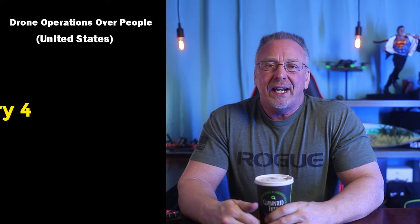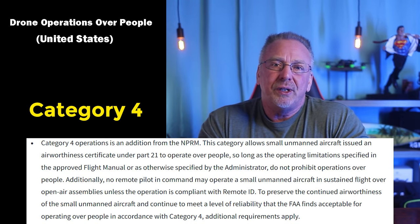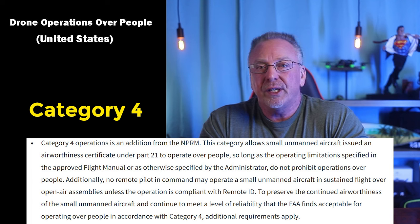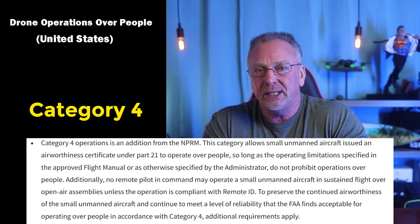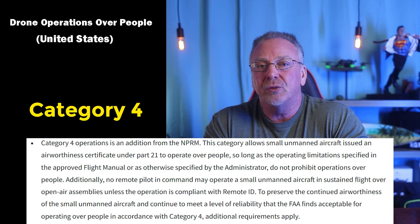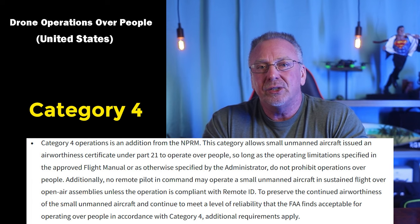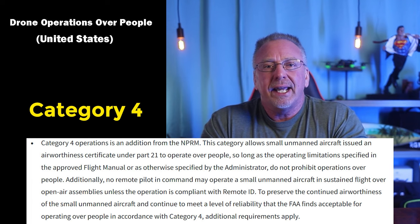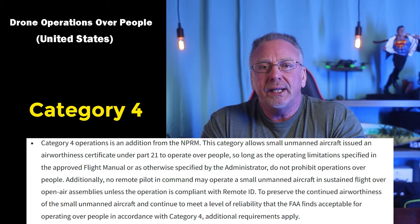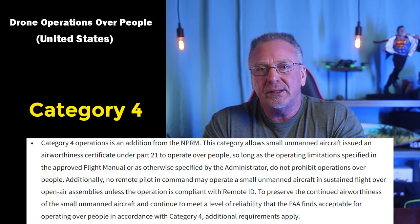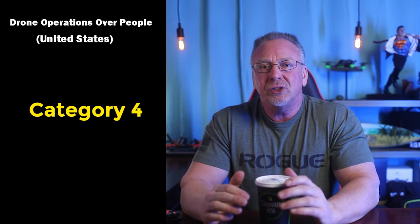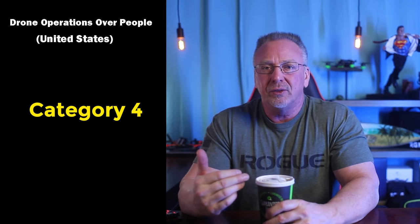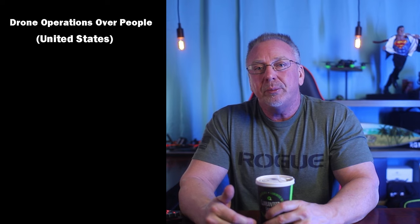Category four allows small unmanned aircraft issued an airworthiness certificate under Part 21 to operate over people, so long as the operating limitations in the approved flight manual do not prohibit it — and sustained flights over open air assemblies still require Remote ID compliance. Category four involves an expensive and time-consuming airworthiness certification process; it's not something individual hobbyists or most operators will ever deal with.